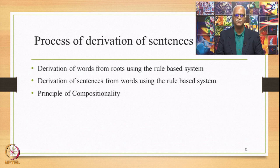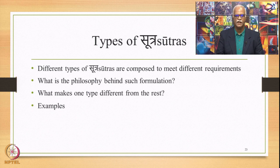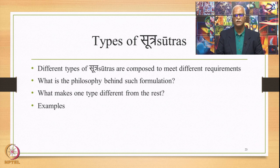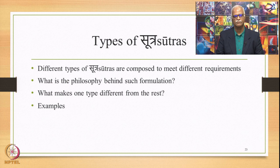We shall also study the principle of compositionality, which functions at three levels in Paninian grammar — Artha, Shabda, and Swara. The Paninian grammar is composed of sutras; not all sutras are equal, and they perform different kinds of functions. Accordingly, there are different types of sutras composed to meet different requirements of the system. The question we shall ask is: what is the philosophy behind such formulation, and what makes one type of sutra different from the rest? We shall address this with examples.